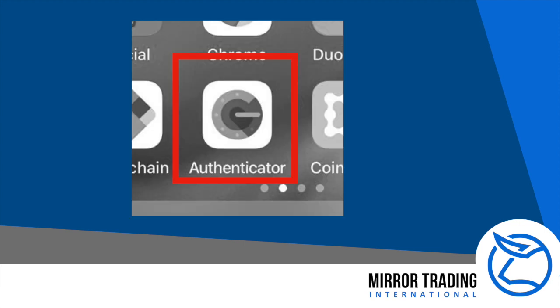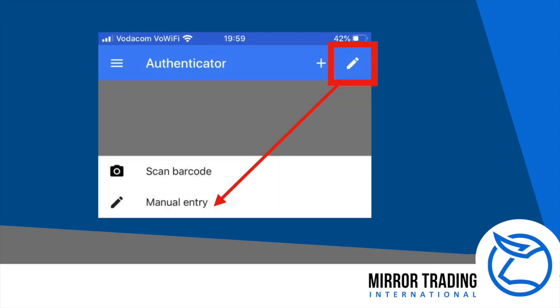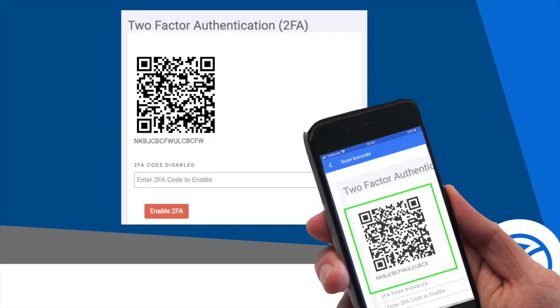Now go to your mobile device and open the Google Authenticator app. When the app opens, you will notice two icons. There is a pen on the far right, which you can use to enter the 16-digit key should your mobile device not have a camera. If your mobile device does have a camera, simply click the plus symbol to use your camera to scan the barcode. The app will open your camera and a green indicator square — align these over the barcode and the app will scan the code.